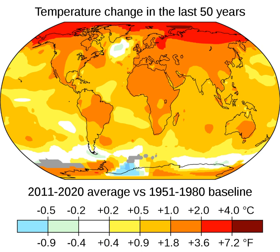This article contains the following sections: 1. Terminology, 2. Observed temperature rise, 3. Drivers of recent temperature rise, 4. Future warming and the carbon budget, 5. Impacts, 6. Responses, mitigation and adaptation, 7. Policies and politics, 8. Scientific consensus and society, 9. Discovery.